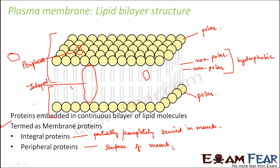You might be thinking that basically it consists of more lipids since two layers are already present and proteins are only here and there. But actually that is not the case. Take the example of the red blood cells of human beings — they consist of almost 52% protein and 40% lipids in their plasma membrane. So even though proteins are embedded, that doesn't mean only a little bit of protein is there; it is present to a large extent.